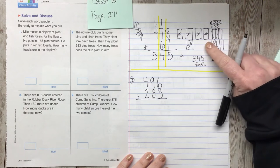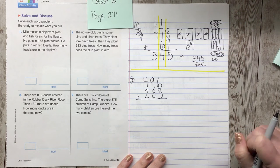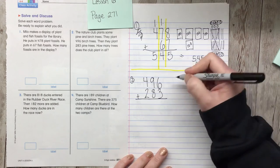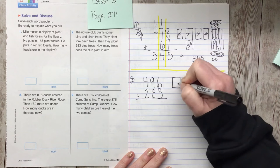The Nature Club plants some pine and birch trees. They plant 496 birch trees. Then they plant 283 pine trees. How many trees does the club plant in all? So there we are again, we're going to add these together. Which numbers are we going to add together? Go ahead and unmute yourself and tell me. Yeah, we're working with a big number here: 496 plus 283. Whoa! I told you we were going to get into some big numbers. We have our equation. What are we going to do now?